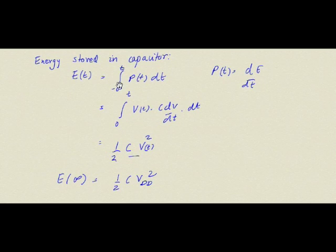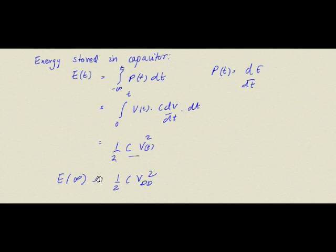The energy delivered to a device is the integral of power over time. In our case, since the voltage across the capacitor is 0 before t=0, we integrate from 0 to t. The energy is the integral of V times C dV/dt dt, which simplifies to the integral of V dV, giving V²/2. So the energy stored in the capacitor at time t is ½CV², and when fully charged to VDD, it is ½CV²DD.